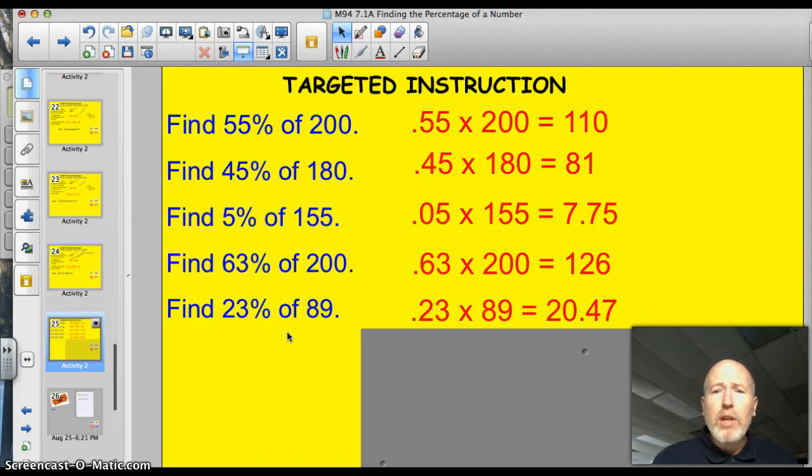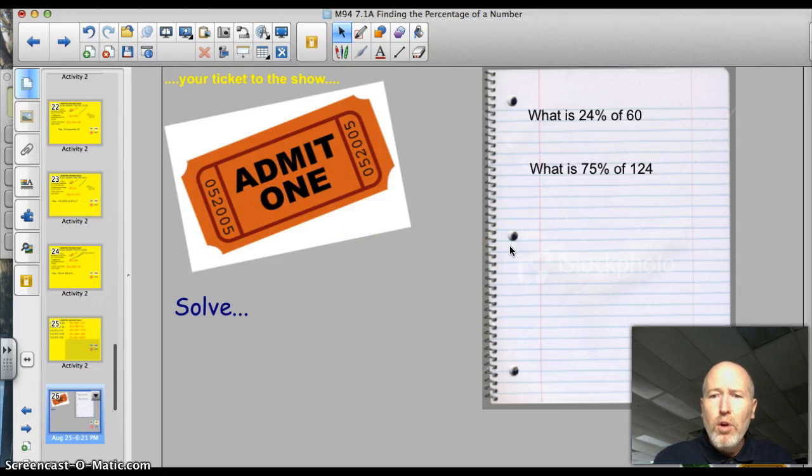All right, remember those steps. Divide by 100 by moving the decimal two spots to the left. Multiply that decimal, then, times whatever number you're working with. Check to see if your answer makes sense. All right, here's your ticket to the show. Complete these two problems for tomorrow and bring them to me in class. What is 24% of 60? What is 75% of 124?